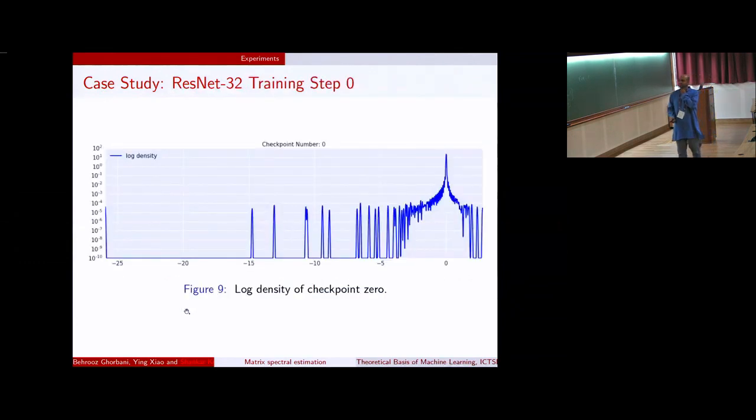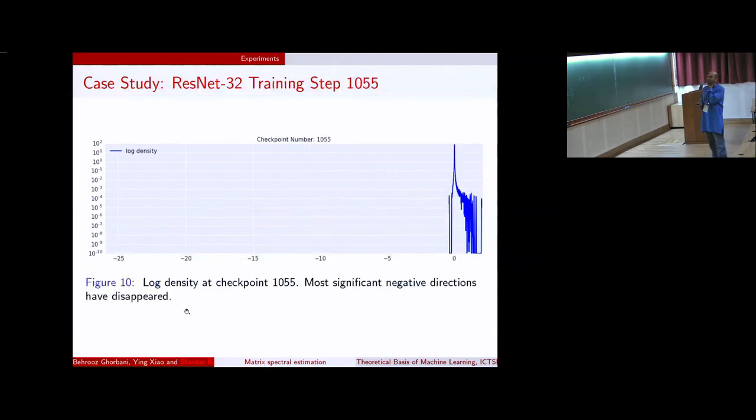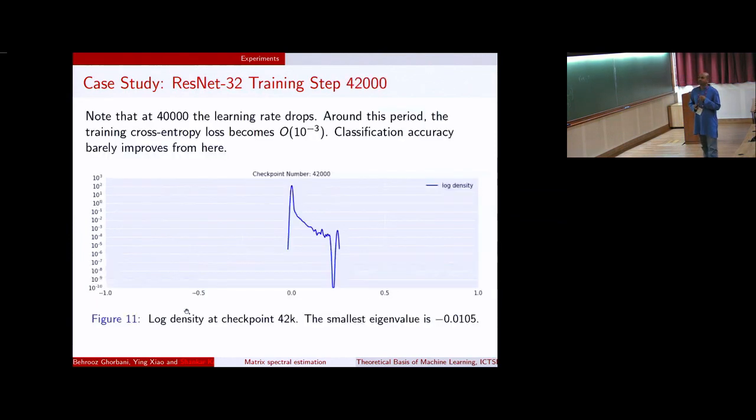This is how the spectrum looks at step zero. This is when you initialize it randomly. So you can see that again, there's a lot of zero eigenvalues. There are some positive, and then there are a bunch of negative eigenvalues. You run SGD for about 1,000 steps. This is what happens. Almost all the negative eigenvalues disappear. You are almost in a convex region. This is what I was trying to tell you why this is useful. Now, what happens after this is quite interesting.